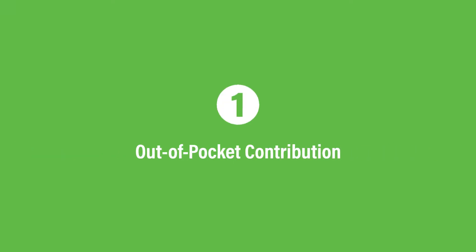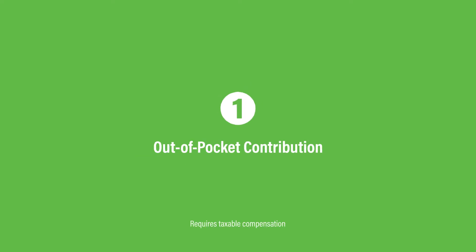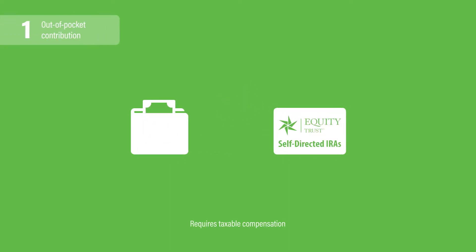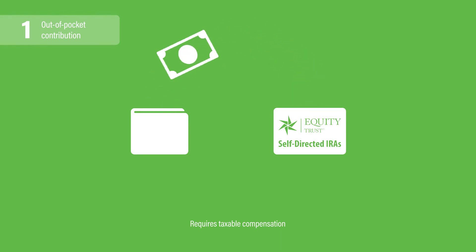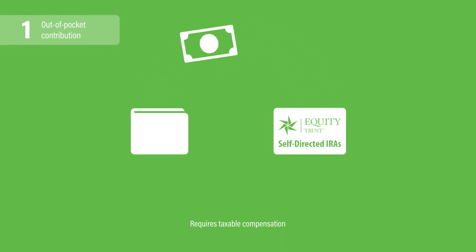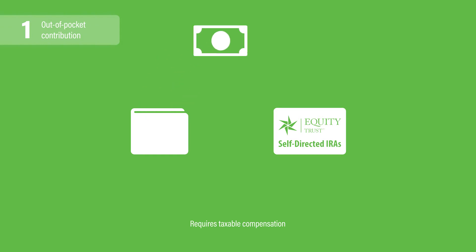The first option to fund an IRA is with an out-of-pocket contribution. Assuming you or your spouse earn taxable compensation for the year, you can make a contribution to your IRA from your personal checking or savings account, or with a credit card payment.